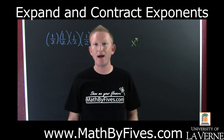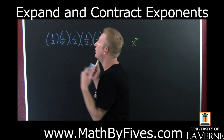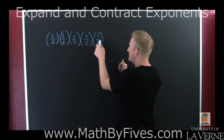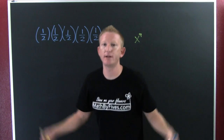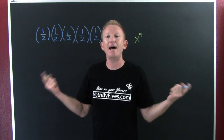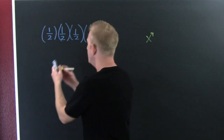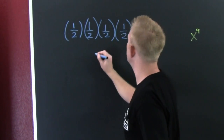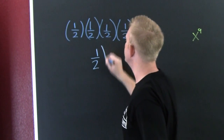Exponents — expand and contract. Oh man. Half times half times half times half times half. That's a lot of writing. I wish there was a way that I could write that in more compact notation. So that's going to be one half to the...